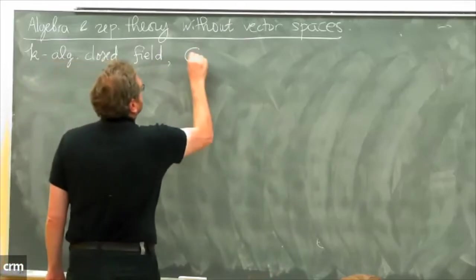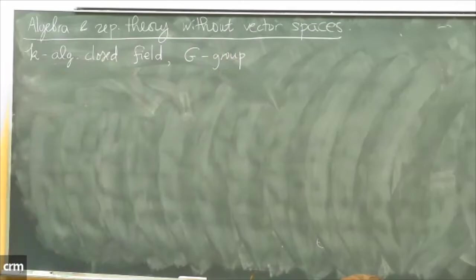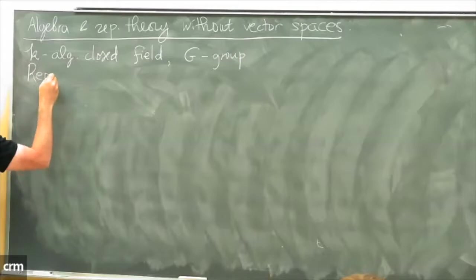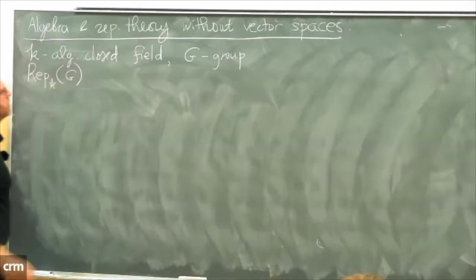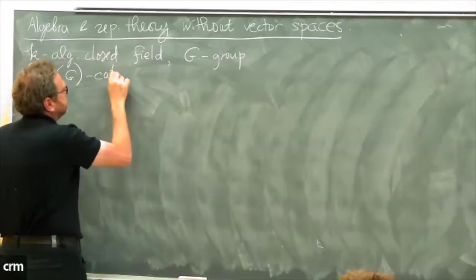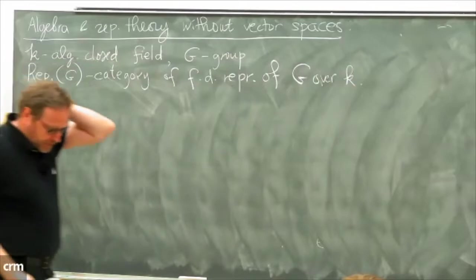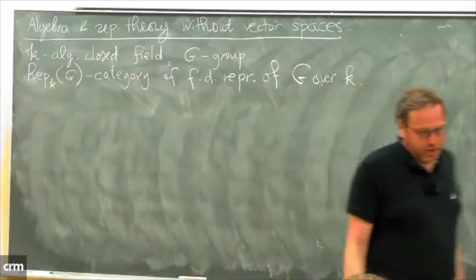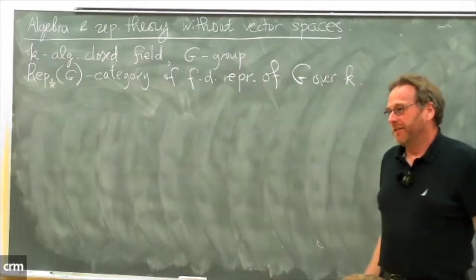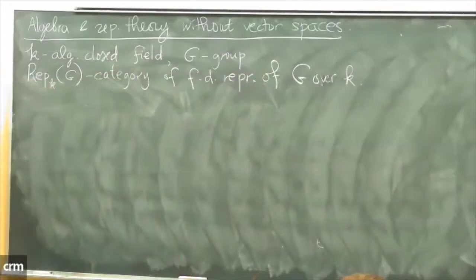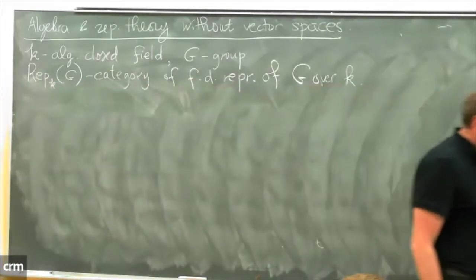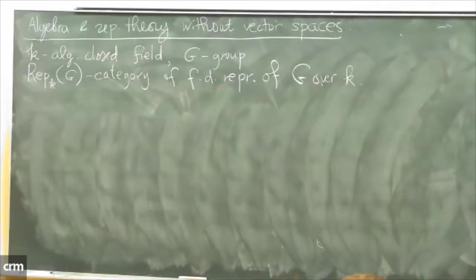Suppose g is a group. One of the main objects of study of representation theory is the category of representations of the group g over the field k — the category of finite-dimensional representations, i.e., actions of g on finite-dimensional vector spaces. I want to abstract away the group and the vector spaces and just think about what kind of structures and properties this category has.